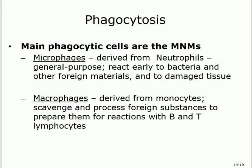Phagocytosis means eating or engulfing other cells. We have two types: microphage (small eaters) that come from neutrophils, and macrophage (large eaters) that come from monocytes. Microphage come from neutrophils when they react with bacteria or damaged cells; macrophage, the big ones, come from monocytes.